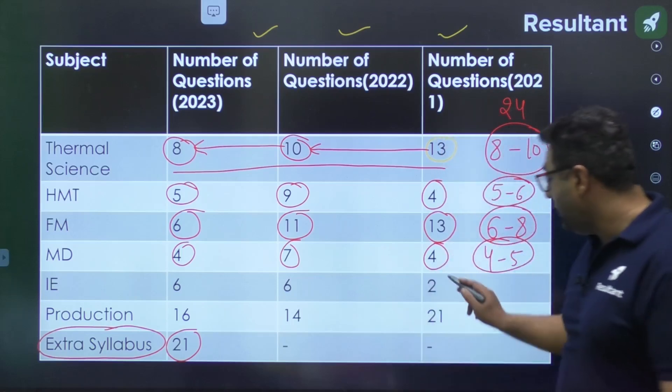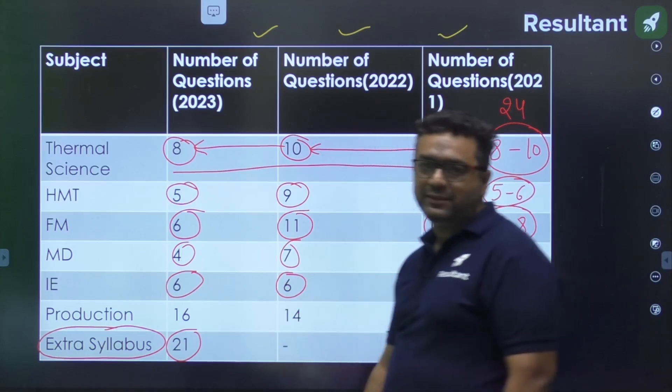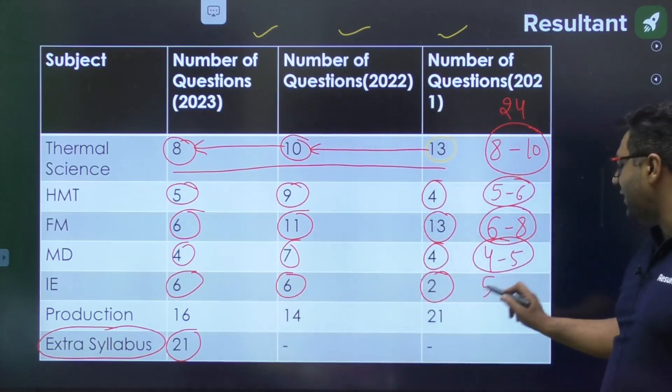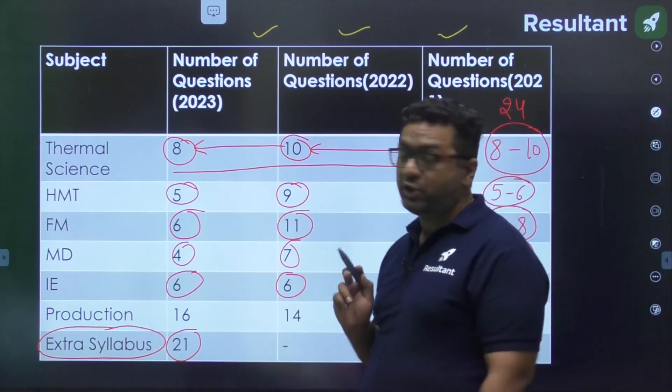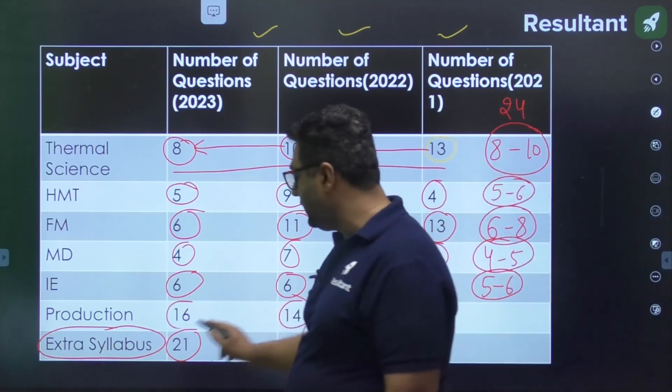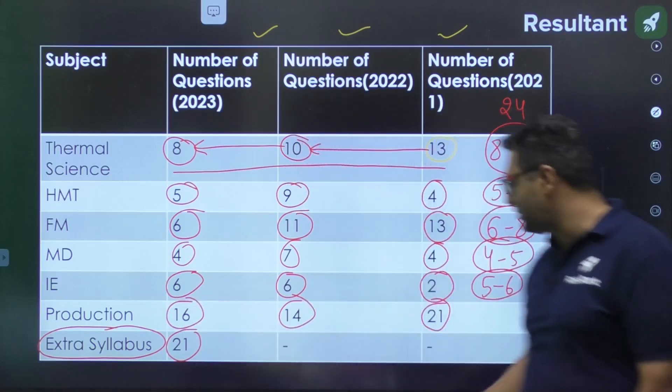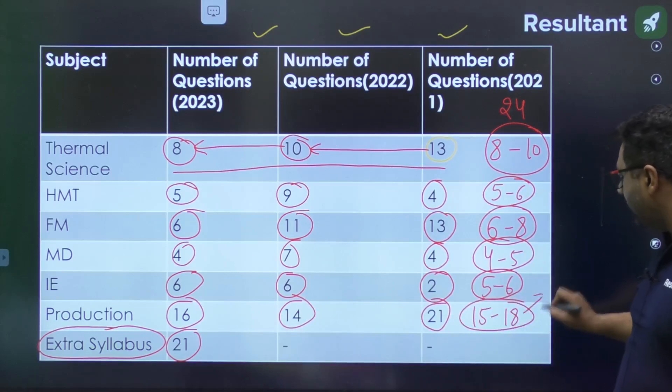Industrial Engineering was 2 in 2021, then 6, then 6. It's a good subject, we can expect 5 to 6 questions similar to HMT. Production is always higher weightage - it was 21, then 14, then 16. You can expect somewhere around 15 to 18 questions from this topic, even in some good case it can go up to 20.